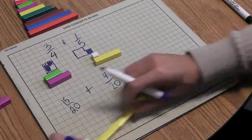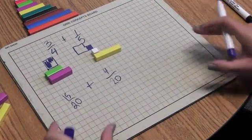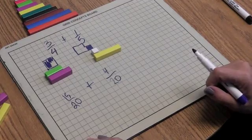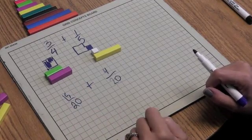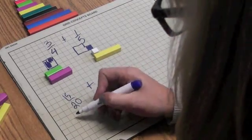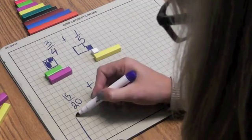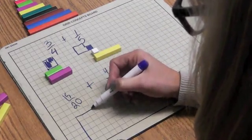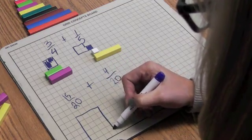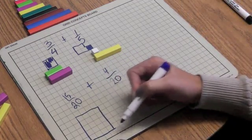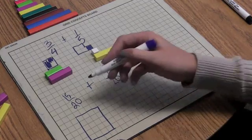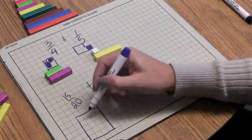Okay. So I'm adding these two fractions. Now, these fractions are equivalent to these fractions. So if I had to draw out 15 twentieths, I would create a shape that would have 4 columns by 5 rows. And I have 20 little squares inside, and I'm going to color 15 of them.